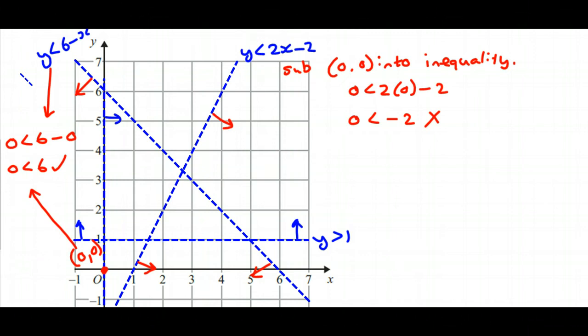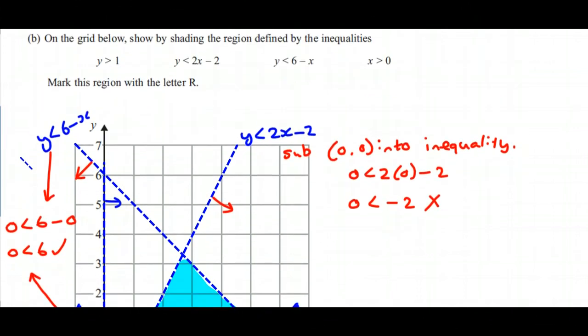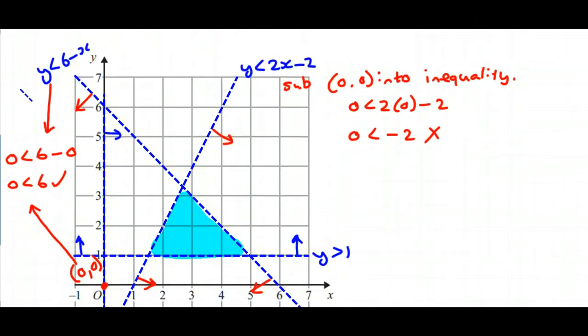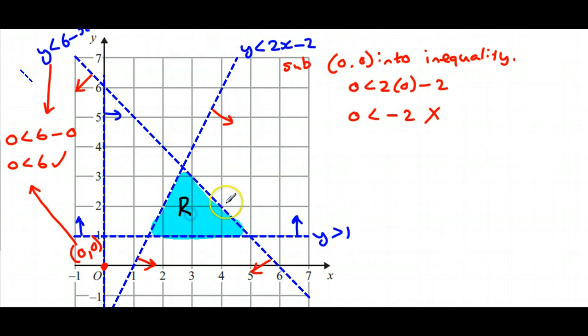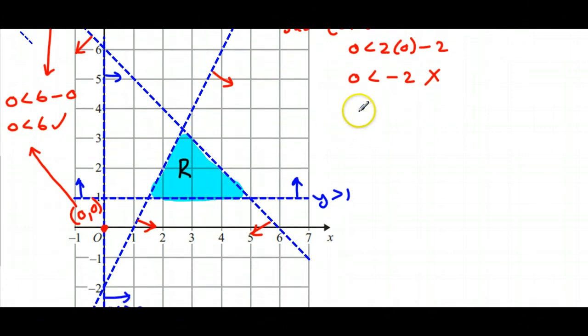What that boils down to is that the bits that satisfy all of those inequalities, that are on the correct side of all of those lines, is this bit here. Just want to check that the question indeed says mark this region with the letter R, so it'd be silly to miss out on that final mark for doing what I asked you to do. This is our region R.